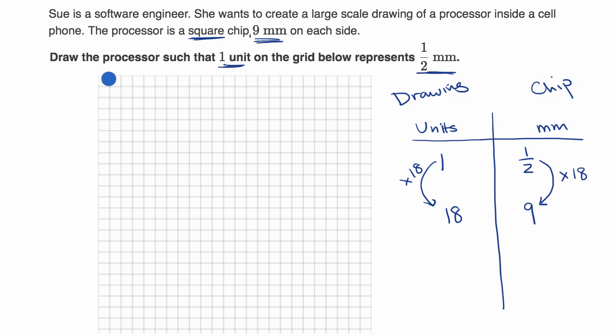And so I would want to do 18 units on a side. So one, two, three, four, five, six, seven, eight, nine, ten, eleven, twelve, thirteen, fourteen, fifteen, sixteen, seventeen, eighteen. So that would be the left side of the chip.